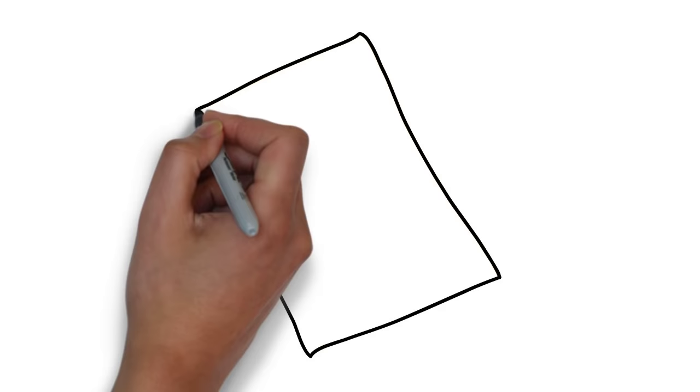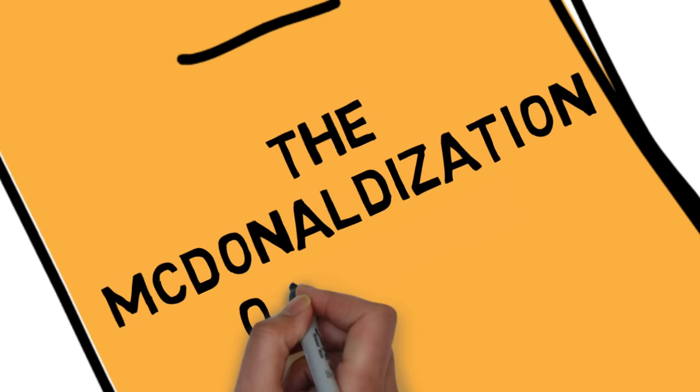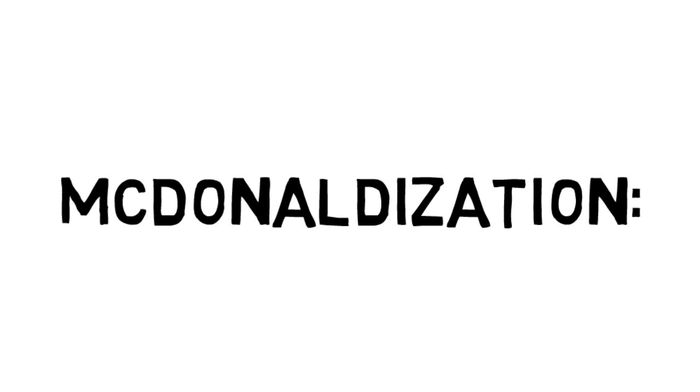In 1993, George Ritzer published his book titled The McDonaldization of Society. The term McDonaldization refers to the business model adopted by McDonald's in the fast food industry that focuses on the four main elements.